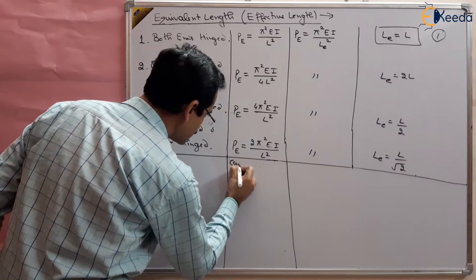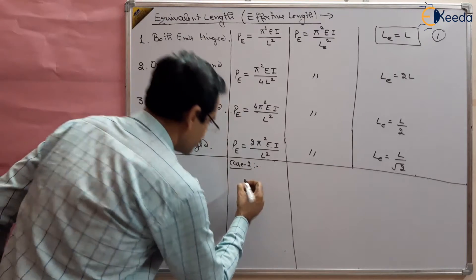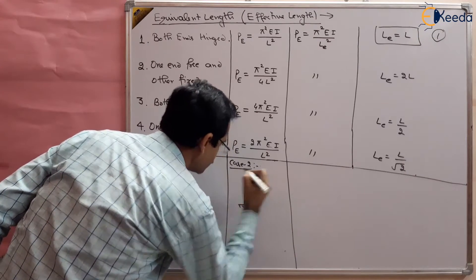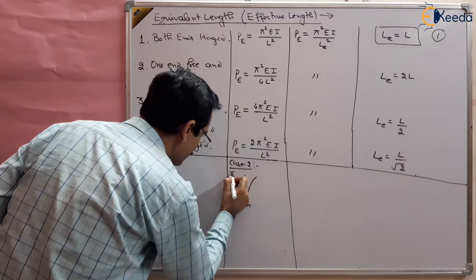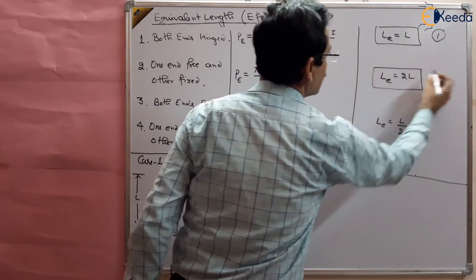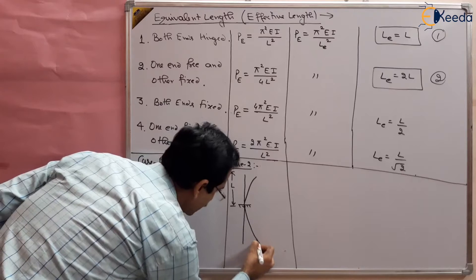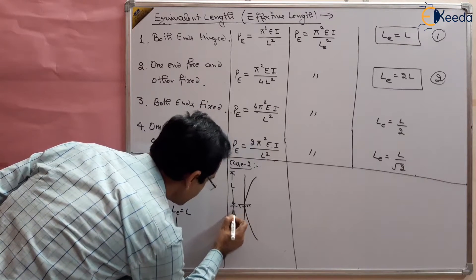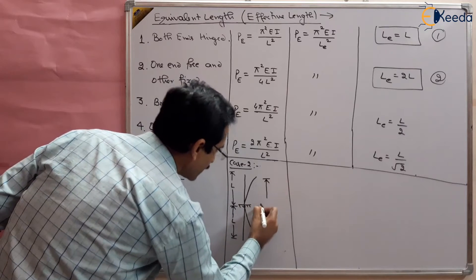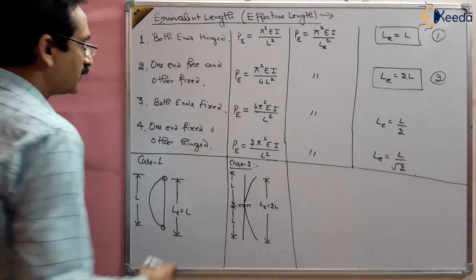Case 2: one end free and one end fixed. The free end is at the top and the fixed end is at the bottom. The actual length is L, but the effective length is 2L. We extend the curve — a mirror image adds one more length L — so the effective length Le = 2L.